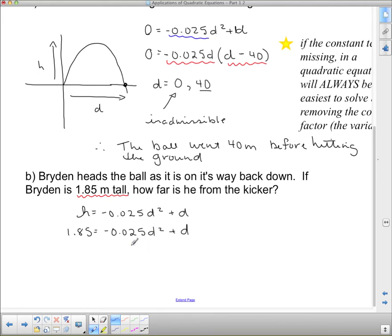Now, I have to rearrange to get one side equal to 0. I prefer if my a term is positive. So I'm going to get this side equal to 0 since it's negative here. I'm going to add this term to both sides and subtract this term from both sides to get 0.025d squared minus d plus 1.85 equals 0.